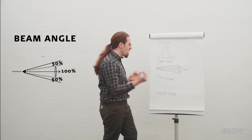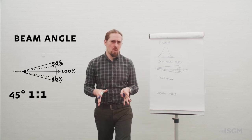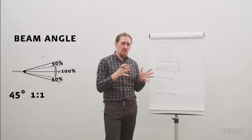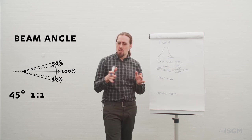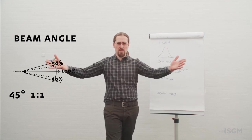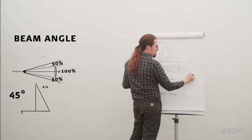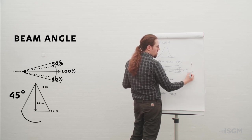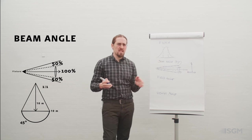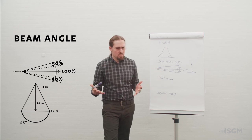We tend to think of 45 degrees as a one-to-one ratio, meaning that if you are at a distance of 10 meters with a fixture that has a 45-degree beam angle, you will get an aperture of approximately 10 meters width. That's why we call it one-to-one — as shown in the picture, the illuminated surface distance equals the throw distance.